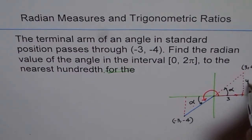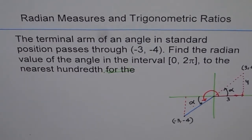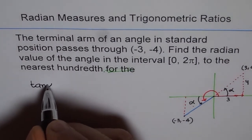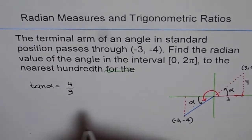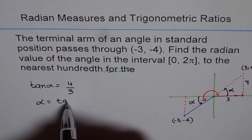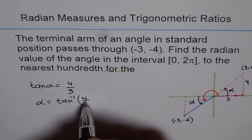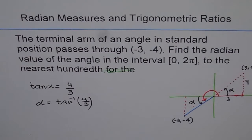And now we can use tan of alpha to find what alpha is. So we say tan(α) is equal to 4 over 3. And therefore α equals tan⁻¹(4/3). Now let's use calculator to figure it out. So we have tan inverse. And remember the calculator setting should always be in radians. Otherwise you will not get the answer in radians. Now here we need answer in radians nearest to 100th place.